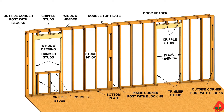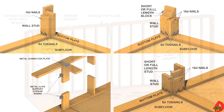Studs are vertical framing members that run between the wall plates. Studs are usually spaced 16 inches on center, but sometimes for advanced framing methods and in certain situations, 24 inches on center can be used. The plate at the bottom of the wall is called a bottom plate, and the one on top is called top plate. The top plate is usually doubled for additional stability.